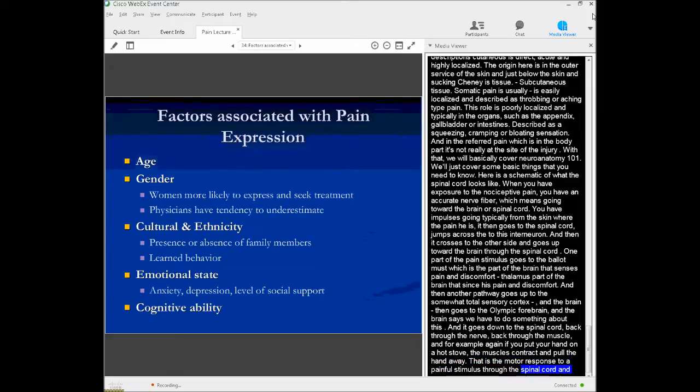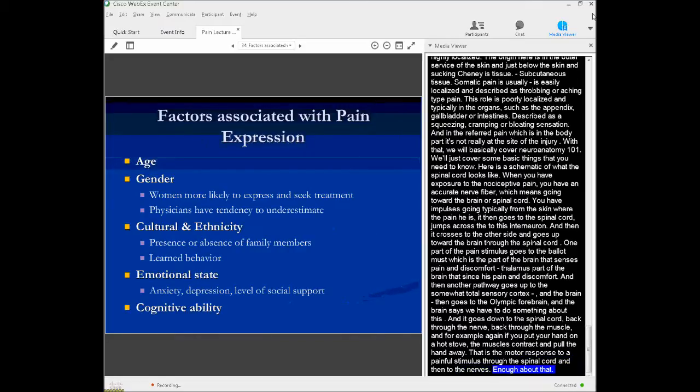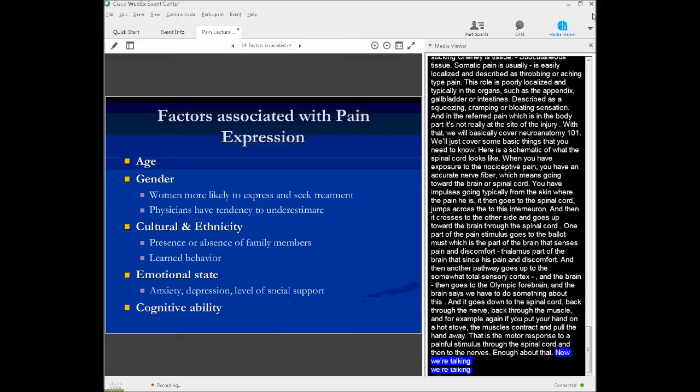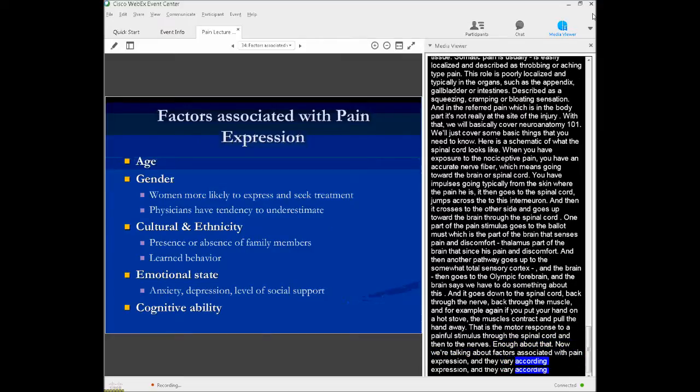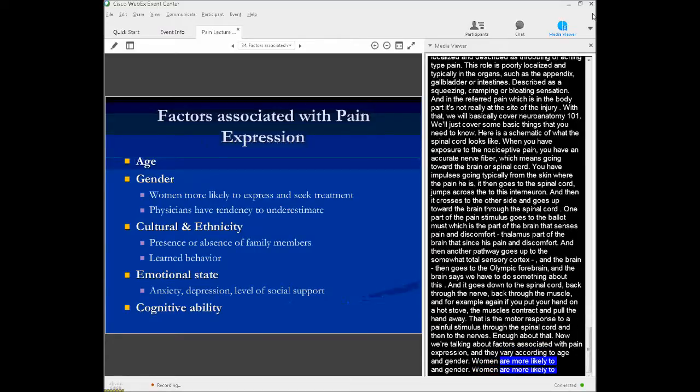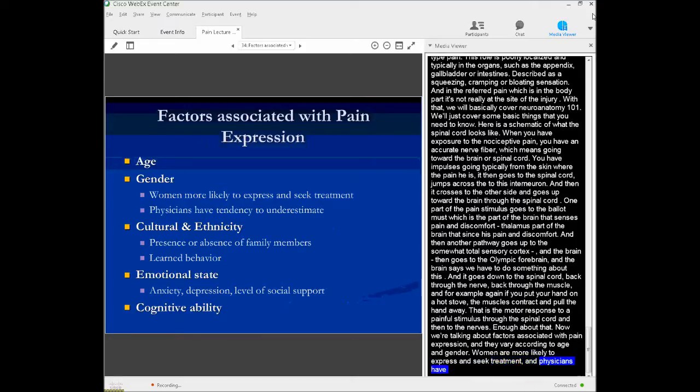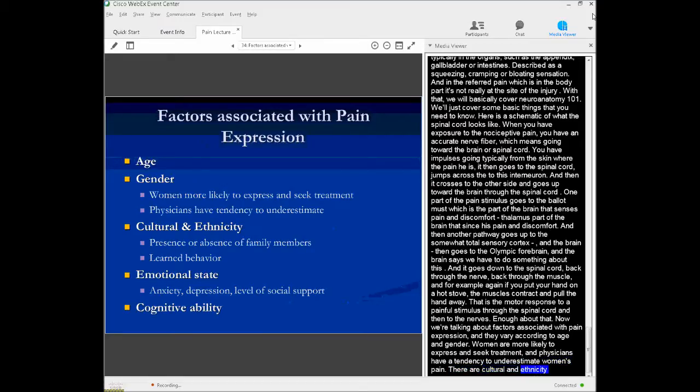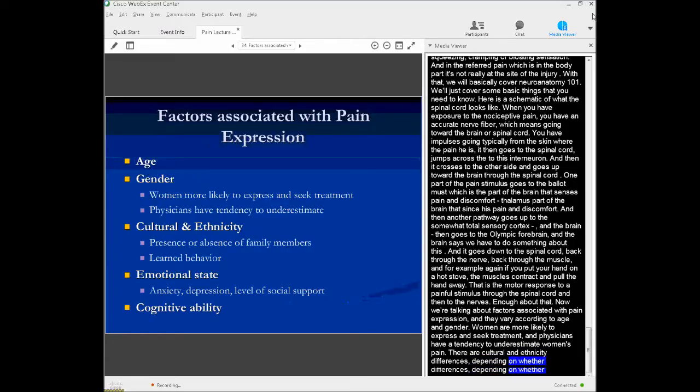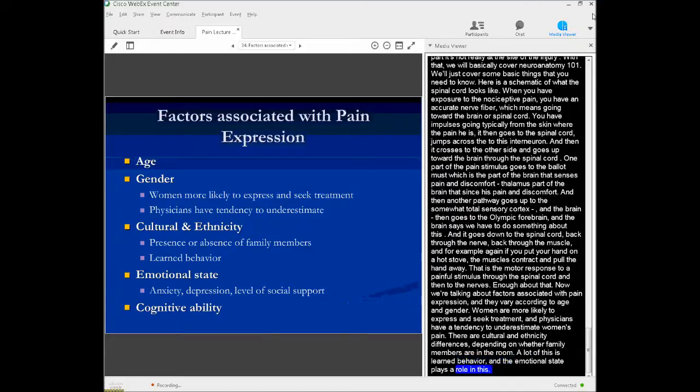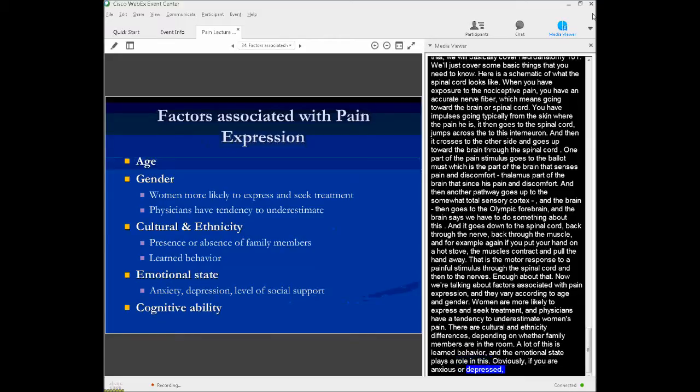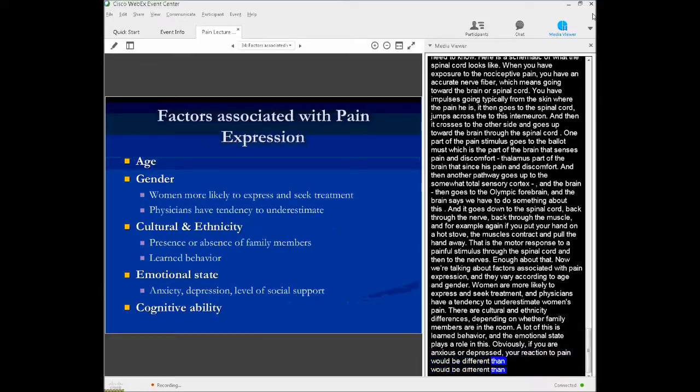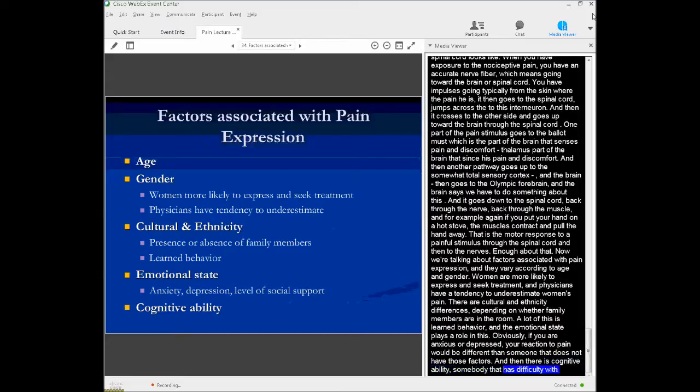Now we talk about factors that are associated with pain expression, and they're going to vary according to age and gender. Women, for example, are more likely to express and seek treatment. And physicians have historically had a tendency to underestimate women's expression of pain. There's cultural and ethnic differences, which may depend on whether or not family members are in the room. A lot of this is learned behavior. The emotional state plays a role. So obviously, if you're anxious, if you're depressed, if you have very poor social support at home, your reaction to pain is going to be different than somebody who doesn't have those factors. And then, of course, there's cognitive ability. Somebody who has difficulty with memory, say from dementia or from a previous stroke, they're not going to be able to express pain as compared to somebody who's healthy.